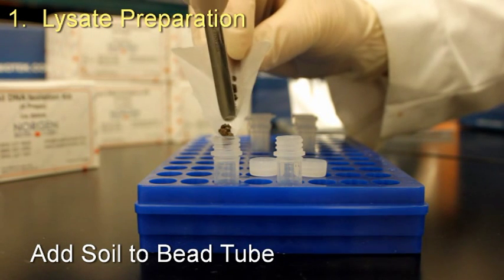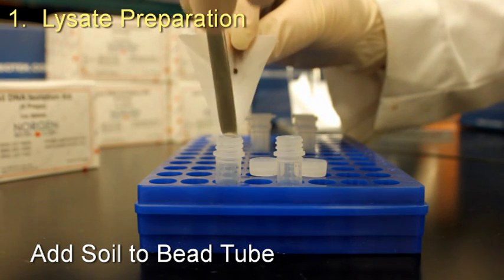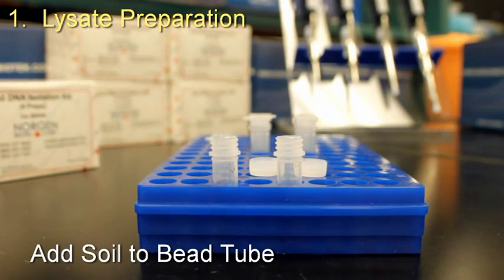Add 250 milligrams of soil sample to the provided bead tubes. Using a weighing paper or weighing funnel will help with this.